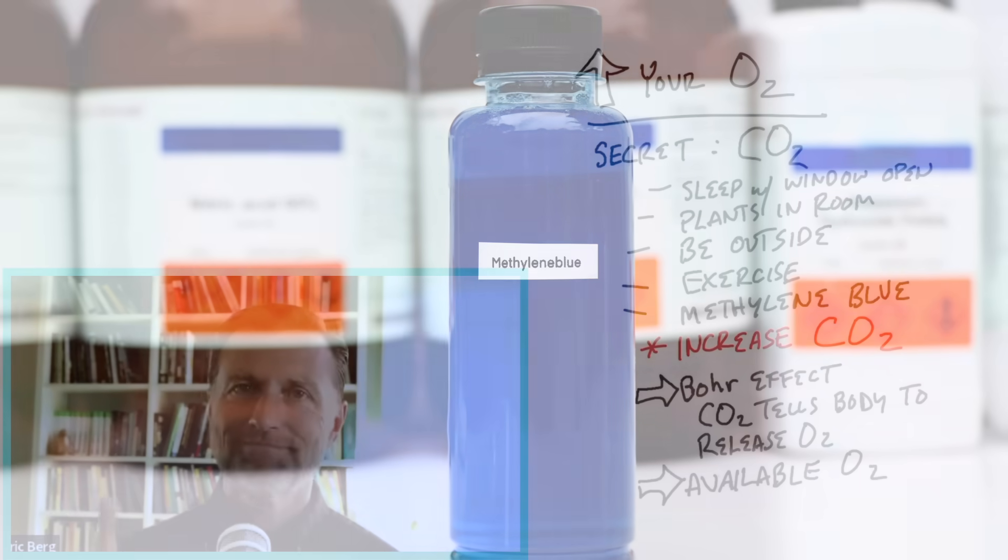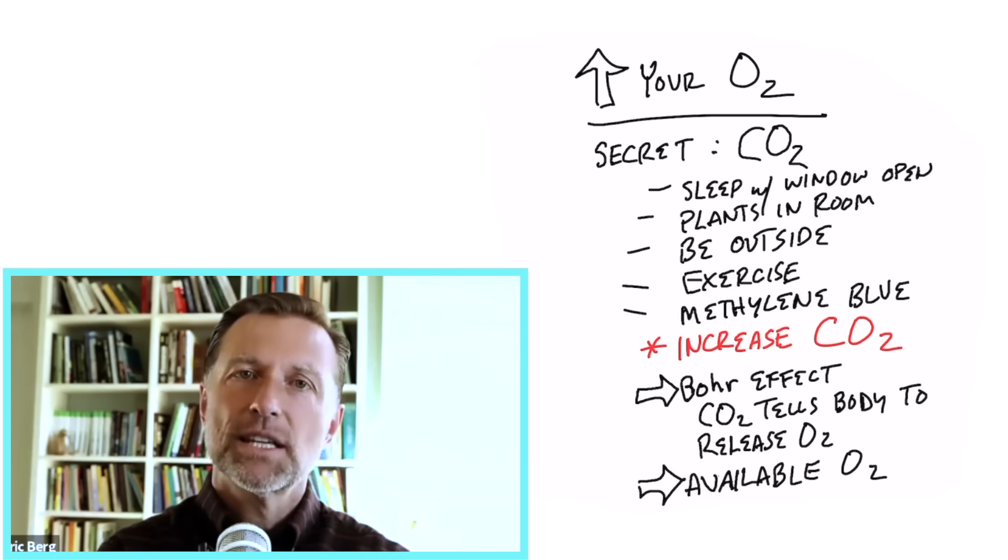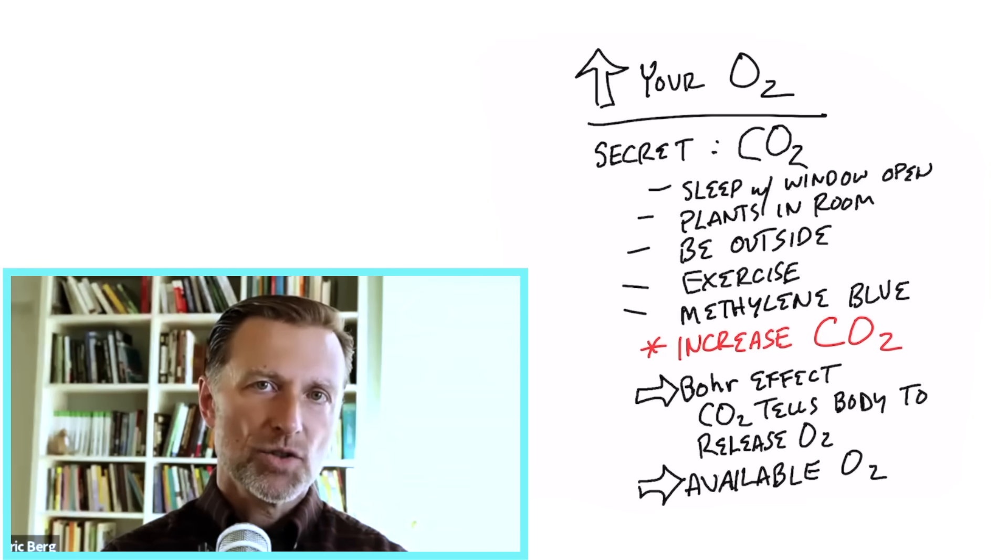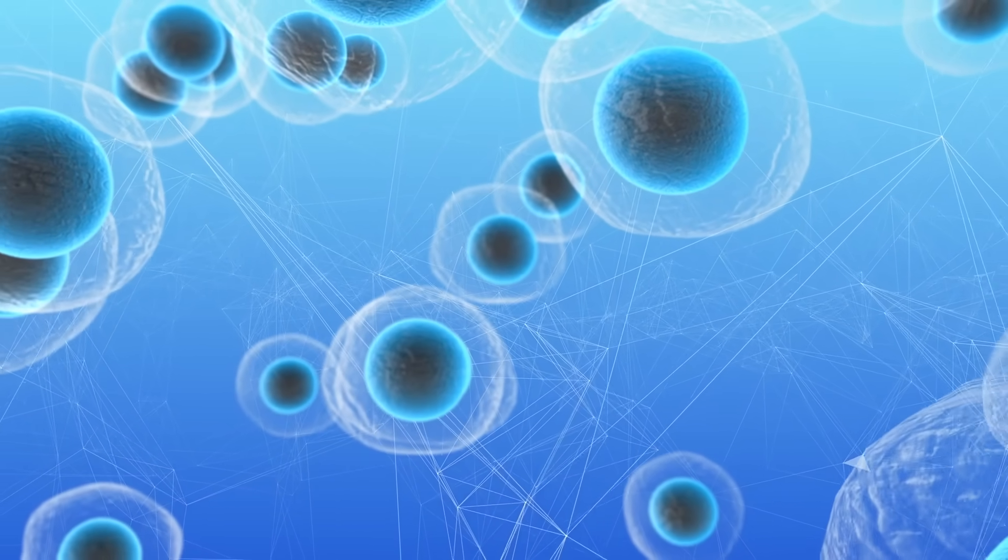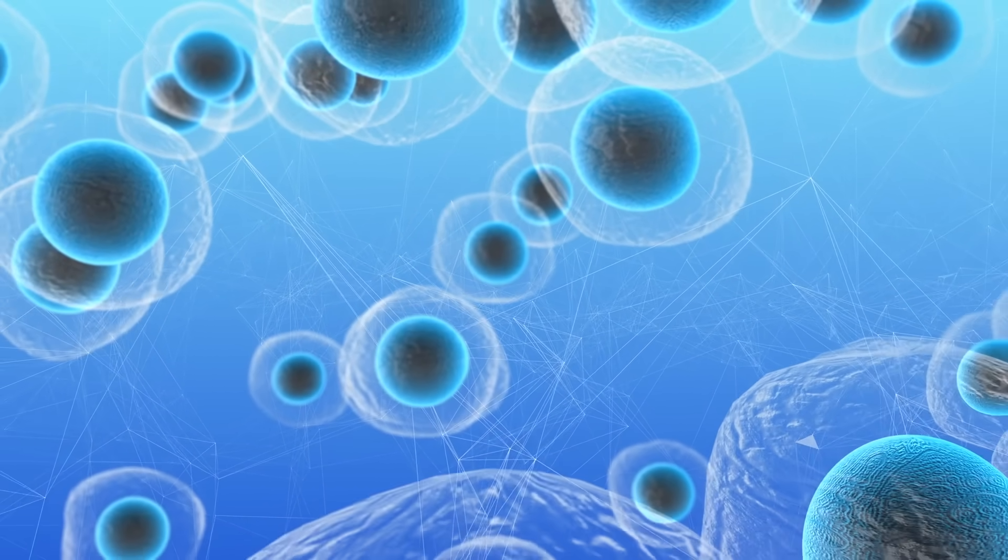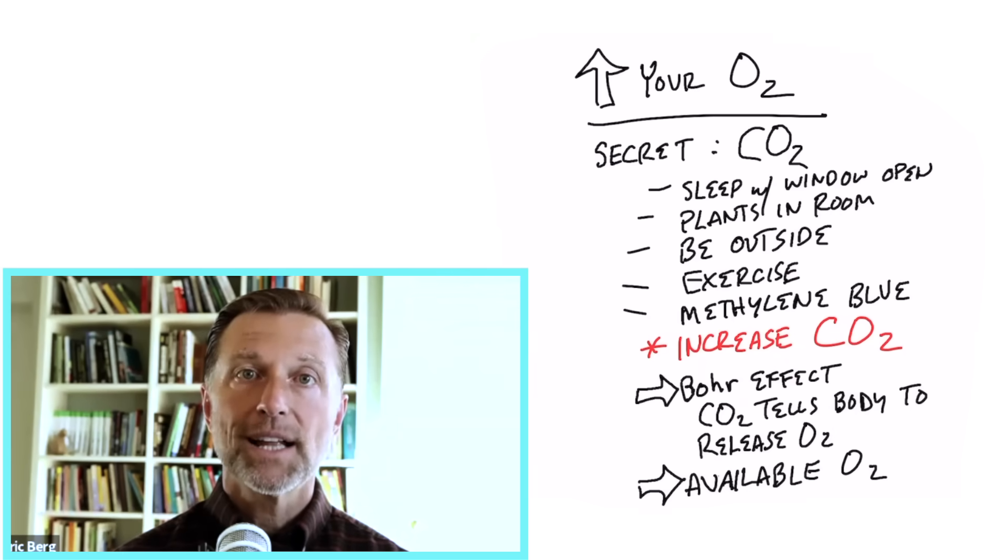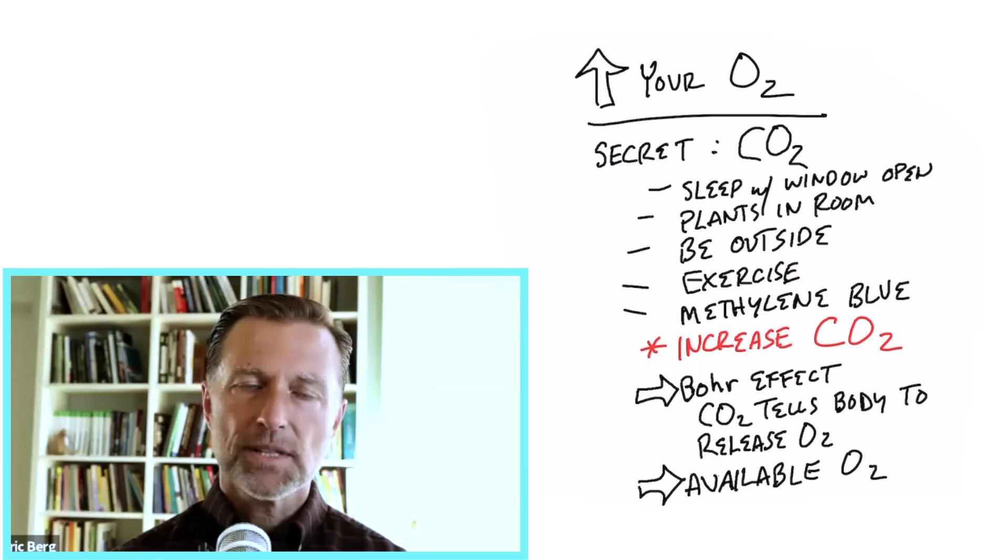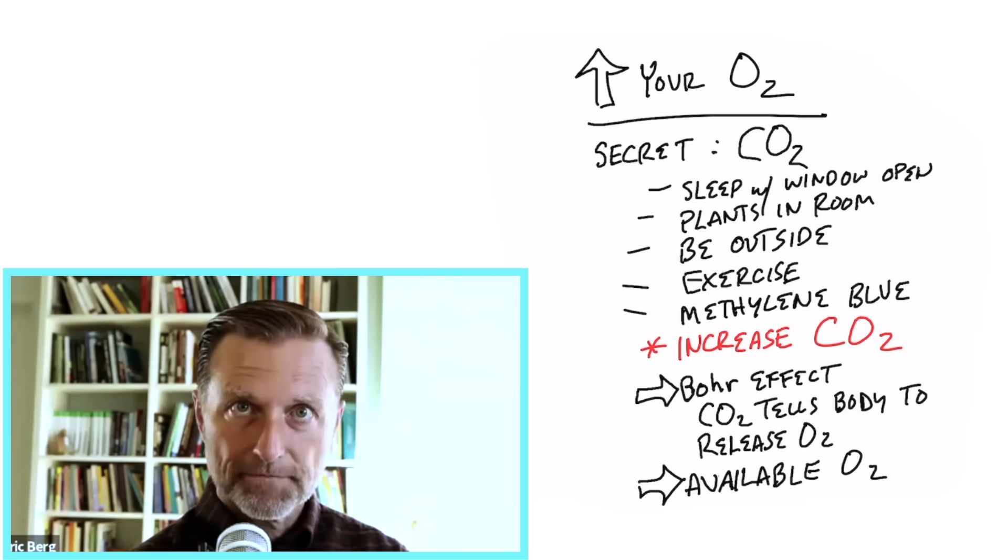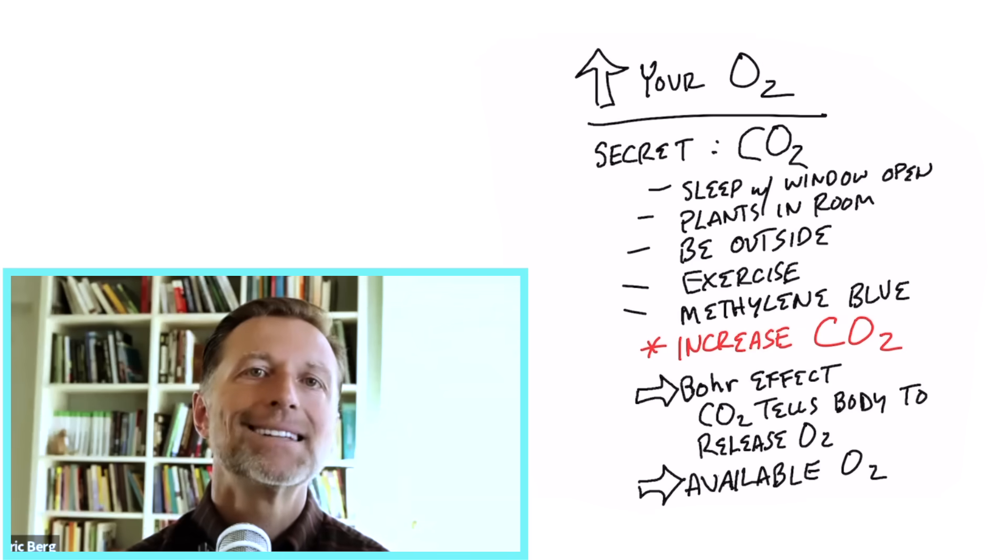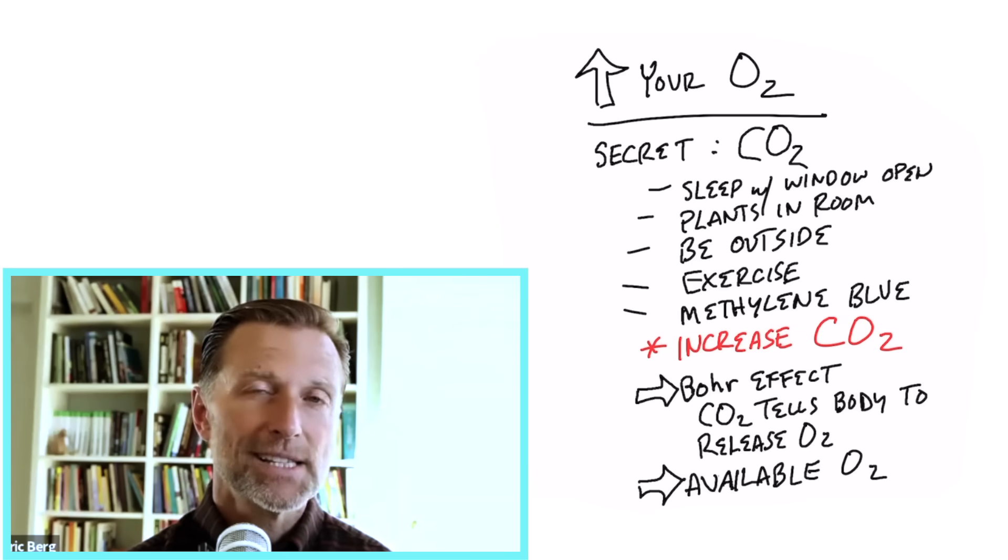But there is a very interesting secret about oxygen that I'm going to share with you right now that you may or may not know about. In order to increase the available oxygen into the cells, the release of oxygen out of your blood cells, there is a trigger. There is this thing that controls it. And that is CO2. That's right, CO2.